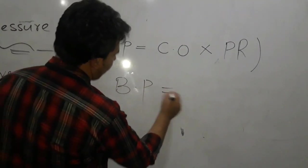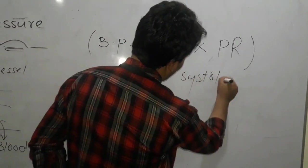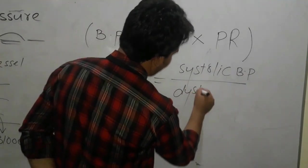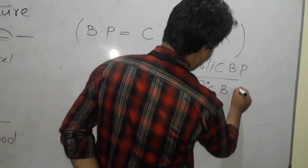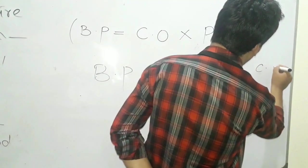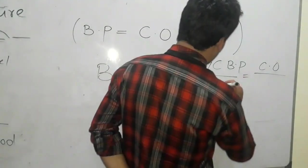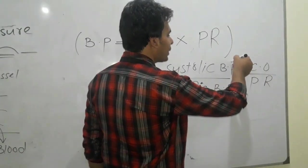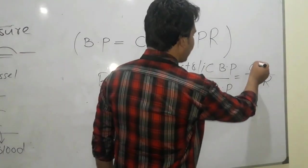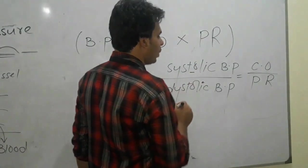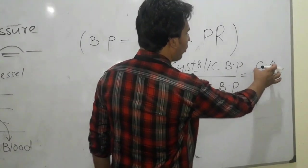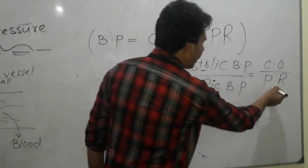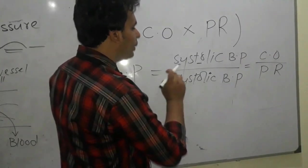BP is equal to systolic BP divided by diastolic BP. Systolic BP is equal to cardiac output, and diastolic BP is equal to peripheral resistance. If cardiac output is greater, the resulting systolic BP will be greater. If cardiac output is less, the systolic BP will be less. So cardiac output has a direct relationship with systolic BP.